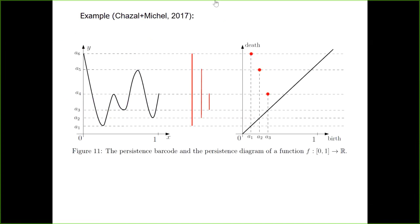I took a nice example from the paper of Cazals and Michel. Here is the function from [0,1] to R. For example, look at a point that starts with A3. We can see that in A3 we have a local minimum, and therefore this is the birth time. Once we go up, we meet a local maximum at A4, and this is the death time. By this, we build the persistent diagram.